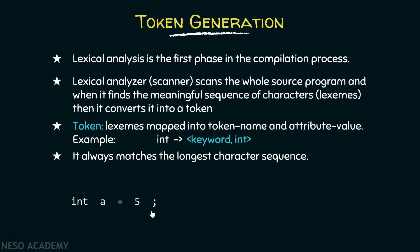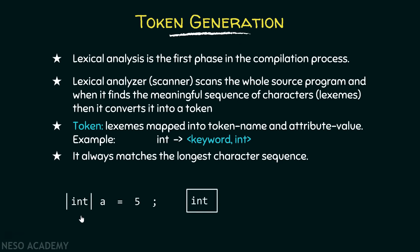Now how will the lexical analyzer scan this statement? It starts from the first character and, since it always matches the longest character sequence, it tries to find if there is any character immediately after. It finds 'i', then 'n', then 't', and then a blank space. Since 'int' is a valid lexeme — a meaningful sequence of characters in C — the lexical analyzer converts this lexeme to a token containing the information that this is a keyword.